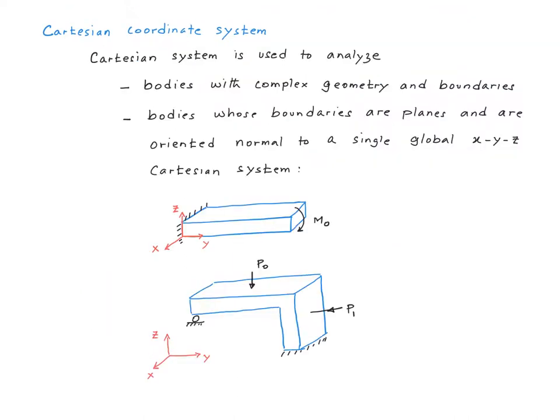So when would we use a Cartesian coordinate system? Well, if you have a body with complex geometry and boundaries, then Cartesian coordinate system is the most convenient system to use. But the system is particularly useful for analyzing bodies whose boundaries are planes and are oriented normal to a single global x, y, z Cartesian system, like in these two examples.